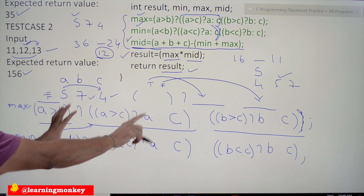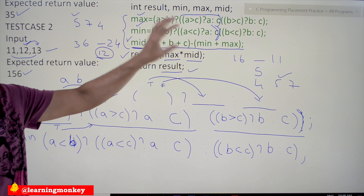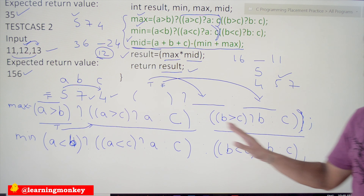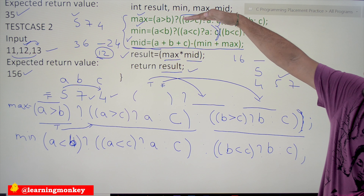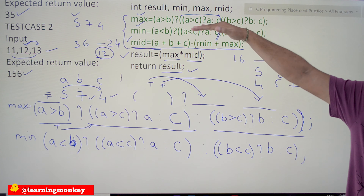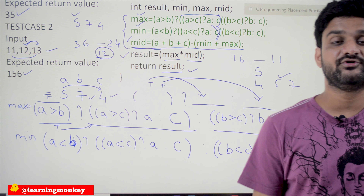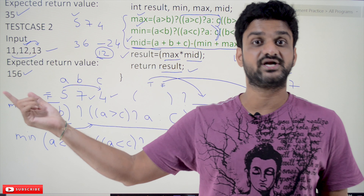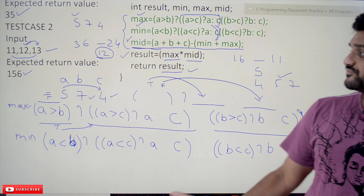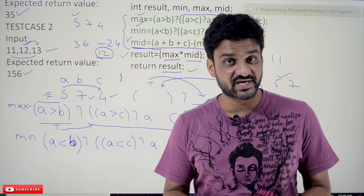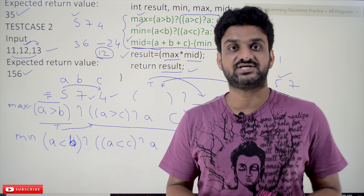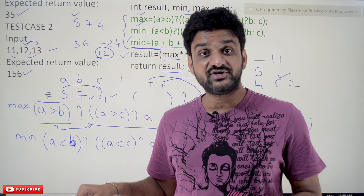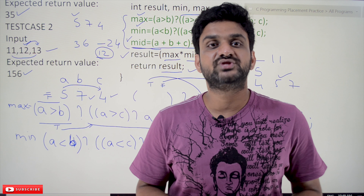We just need to make the changes in those two lines of code — replace the max logic line and the min logic line with the correct ternary operator logic — and the program will definitely give the right output. This logic is correct. If you are good at ternary operators and finding min and max among three elements, this example has already been discussed. Hope you got the clarity on this concept. Thanks for watching — please subscribe, press the bell icon, post doubts in the comments, like and share the video.